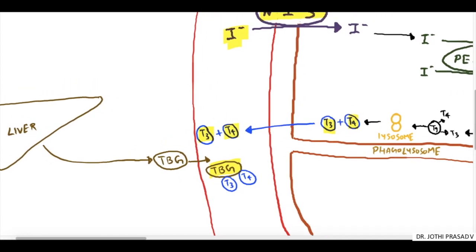The fifth step is called deiodination. In simpler terms, it is a 5 prime deiodination of the outer ring of T4, or peripheral conversion of T4 to T3.